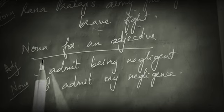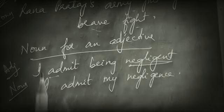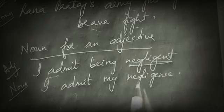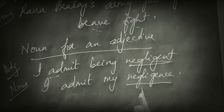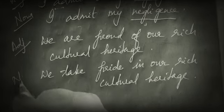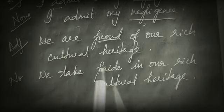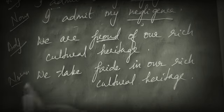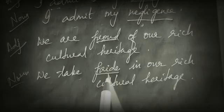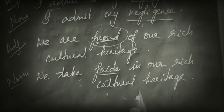Now, substituting a noun for an adjective: 'I admit being negligent' — 'negligent' is the adjective — changes to 'I admit my negligence,' where 'negligence' is the noun. Next, 'We are proud of a rich cultural heritage' — 'proud' is the adjective — changes to 'We take pride in our rich cultural heritage,' where 'pride' is the noun.